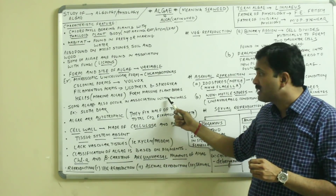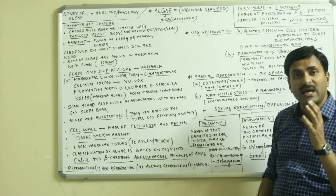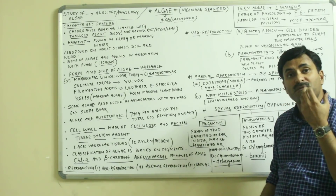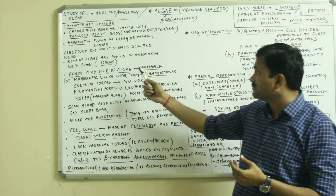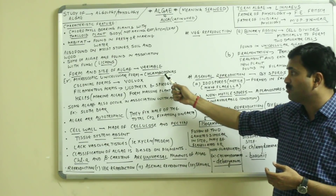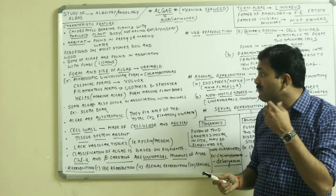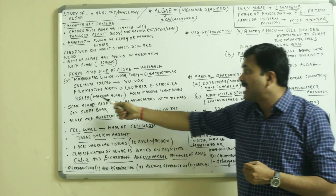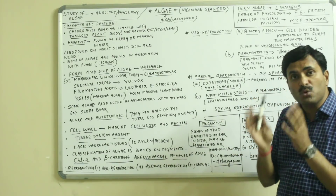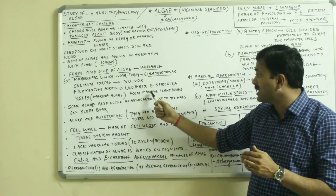Some algaes also occur in association with animals — say for example algaes may be found in association with animals just like the sloth. Now if we talk about the form and the size of the algae, they vary greatly. They may be microscopic, filamentous, or very large forms. The best example of the microscopic unicellular form is Chlamydomonas. Volvox is an example of the colonial form. Ulothrix and Spirogyra are examples of filamentous forms. Kelps are brown algaes found in marine water and are the largest type of algae, sometimes having a size of 100 meters, forming massive plant bodies.